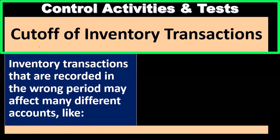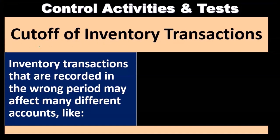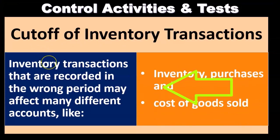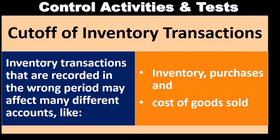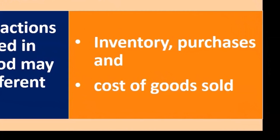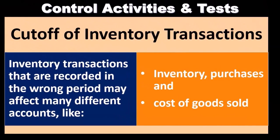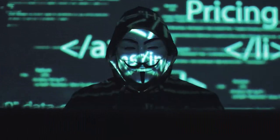Then we have the inventory transactions assertion of cutoff. End-of-year cutoff — inventory transactions recorded in the wrong period may affect many different accounts such as inventory, purchases, and cost of goods sold. If transactions at the end of the year are applied to the wrong period, that could have a substantial impact on the financials. We want to look at those end-of-year transactions and test whether they're recorded in the proper time period. Also note that if there were fraud or deception — such as someone wanting to look good — this would be a key area of concern.